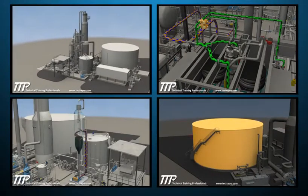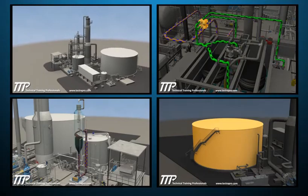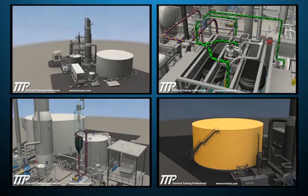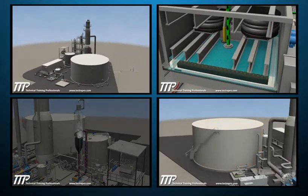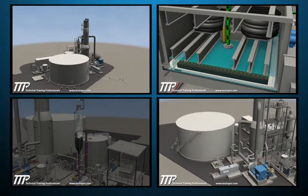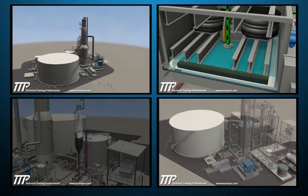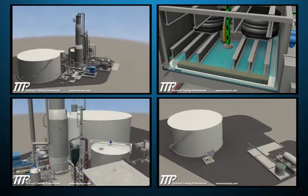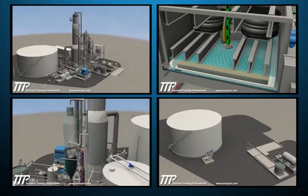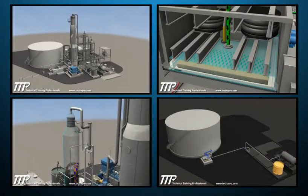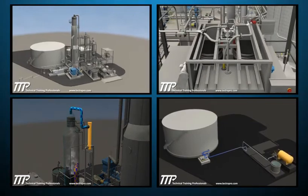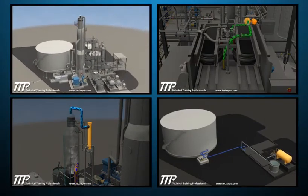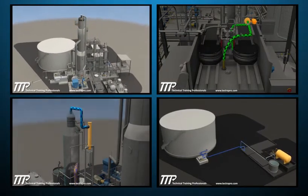The TTP Zero Liquid Discharge course covers design, flow paths, function, and operation of a typical Zero Liquid Discharge water treatment plant. The Zero Liquid Discharge water treatment plant utilizes a brine concentrator and crystallizer to meet environmental concerns such as water scarcity or elimination of liquid waste.